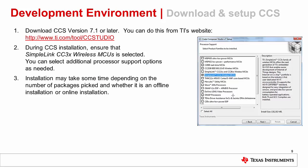Download CCS version 7.1 or later from TI's website. When running the installer, please use the default directory of C:/TI to follow along with this video and other trainings. During the installation process, when you are prompted to select the processor support, select SimpleLink CC3X Wireless MCUs. You can select additional options as needed. Click next, be sure that TI XDS debug probe support is already selected, and proceed with the installation.